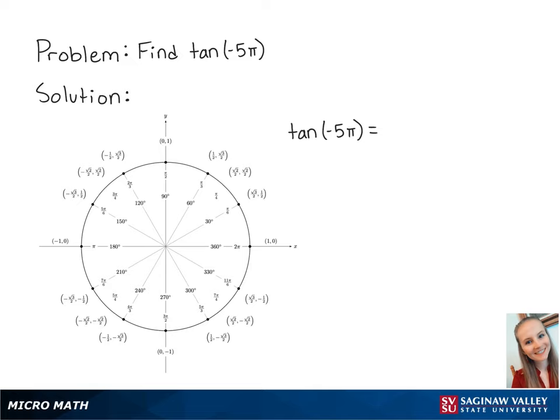For this problem, we're going to find tangent of negative 5 pi. Tangent of negative 5 pi is equal to sine of negative 5 pi over cosine of negative 5 pi.